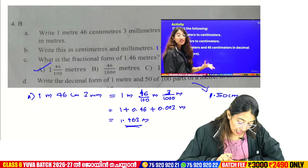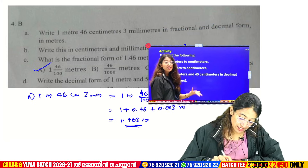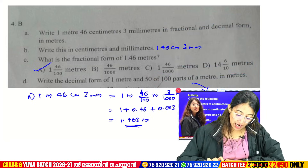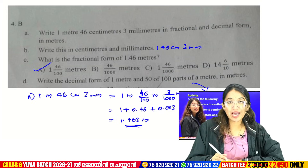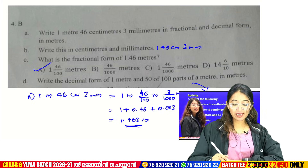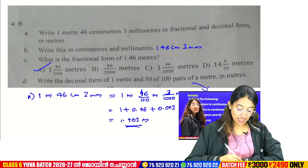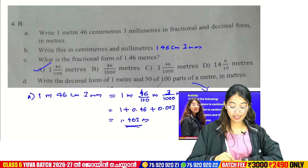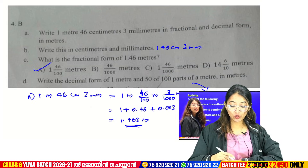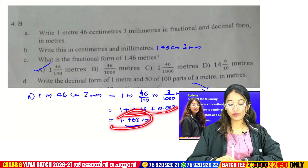If you divide into a conversion — if you missed the image, we did all the conversion questions. Write 1 meter, 46 centimeters, 3 millimeters in fractional and decimal form in meters. 1 meter 46 centimeters 3 millimeters: 1 meter equals 1.46 meters in decimal form. In fractional form, you divide centimeters by 100 and millimeters by 1000.